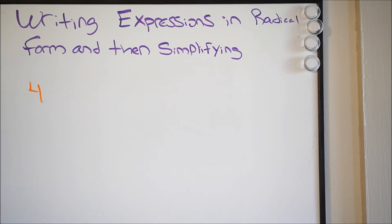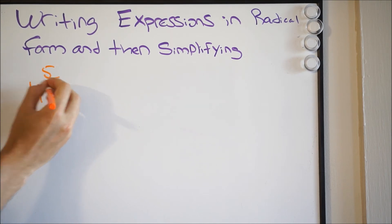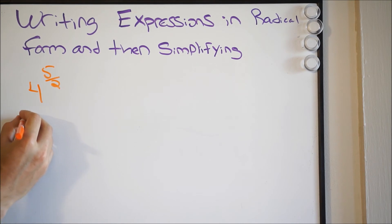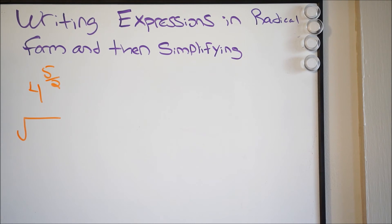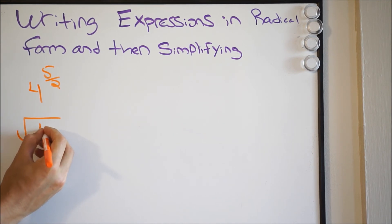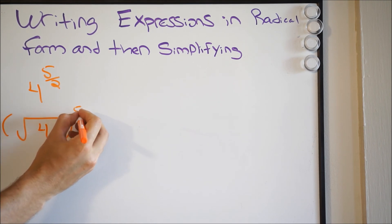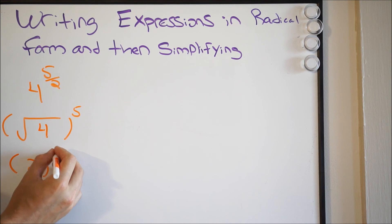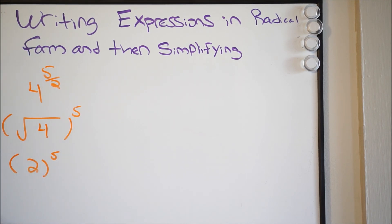Next we have 4 to the 5/2. We're dealing with a fractional exponent, so we can write it as a radical. Notice the denominator is 2, so this is going to be a square root. When you write the square root, you don't have to write the 2 — it's assumed that the 2 is there. So we'll have the square root of 4, all to the 5th power. The square root of 4 is 2, so we have 2 to the 5th power. 2 times 2 times 2 times 2 times 2 gives us 32, which is our final answer.